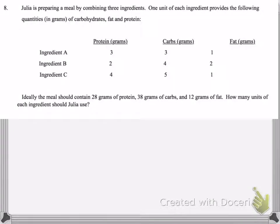Julia is preparing a meal by combining three ingredients. One unit of each ingredient provides the following quantities in grams of carbohydrates, fat, and protein. Ideally the meal should contain 28 grams of protein, 38 grams of carbs, and 12 grams of fat. How many units of each ingredient should Julia use?